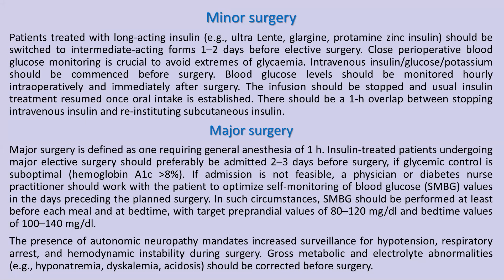For patients treated with long-acting insulin, like Ultralente, Glargine, or Protamine Zinc insulin, these should be switched to intermediate-acting forms one to two days before elective surgery. After that, close perioperative blood glucose monitoring is crucial to avoid extremes of glycemia. Intravenous insulin-glucose-potassium — what we call GIK — should be commenced before surgery.